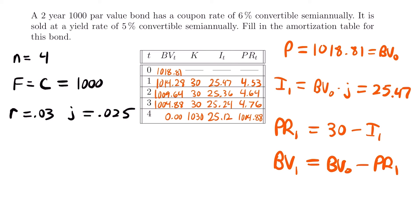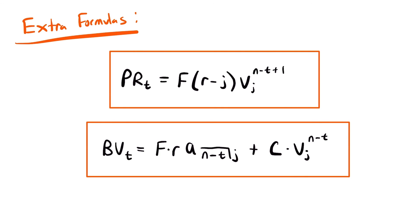Before we end, there are two extra formulas worth noting: you can calculate the principal or book value at any particular moment in time directly, without going through all the amortization calculations step by step. These shortcut formulas can be very helpful. That's all for this lesson. Check out the examples video linked at the end and in the description below. Leave any questions in the comments — I'll see you next time.